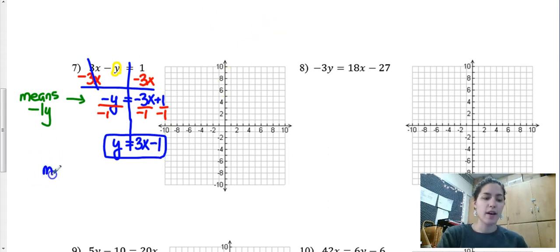Let's identify m, 3 divided by 1 and b is negative 1. We're going to use our y-intercept first at negative 1. Circle it so I remind myself that's where I started.